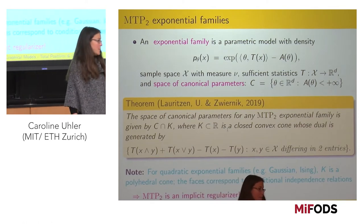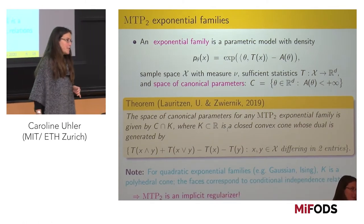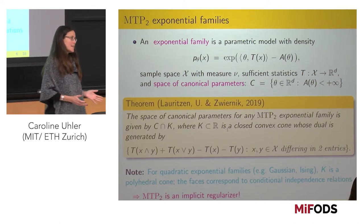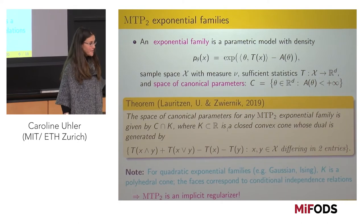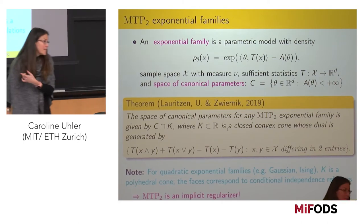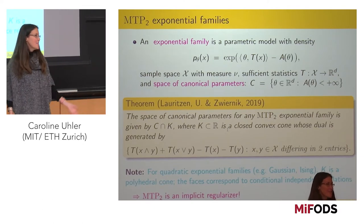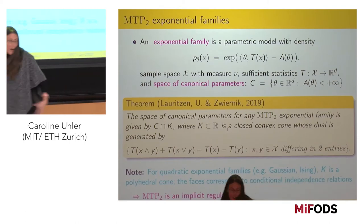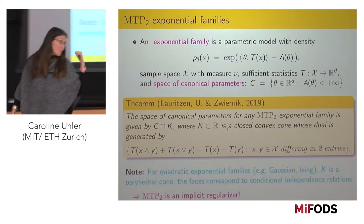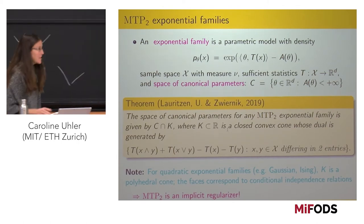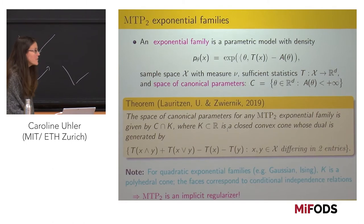Any latent tree model, for example, is MTP2, but modeling under a latent tree model is hard — it's a very non-convex constraint. MTP2 is a less restrictive constraint but has all these nice properties. If you anyways wanted to model under a latent tree model, why not just use MTP2? If you're happy with models like factor analysis models or latent tree models, you should be happy with this because it's implied anyway.